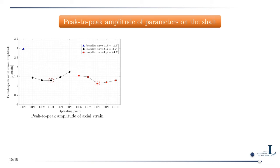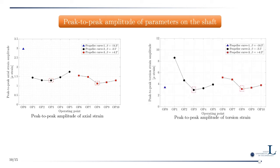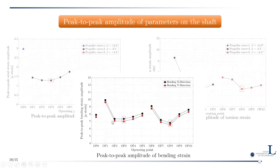Peak-to-peak values of axial strain (left) and torsion strain (right) on the shaft also show local minimums at OP3 and OP8 for both cases. This confirms that operating points with minimum peak-to-peak strain amplitude on the shaft also correspond to minimum peak-to-peak pressure and strain amplitude on the blade — both aligning with the best efficiency point of the propeller curves. A similar result is observed for bending strain.